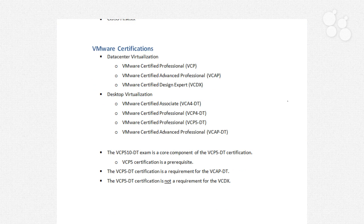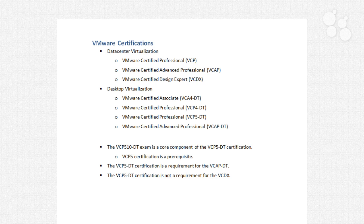We've got a couple of things to talk about first, and that's the certification process itself. This exam is part of the desktop virtualization half of VMware's certification roadmap. As you can see here, it is one in a series of soon-to-be four certifications associated with desktop technologies — the VMware Certified Associate, then the VMware Certified Professional for version 4 and version 5, and then eventually the VMware Certified Advanced Professional. This VCP 5.10-DT exam is a core component of the VCP 5.10-DT certification. You do have to have a VCP 5 certification before you can certify for VCP 5.10-DT, and the reason makes a lot of sense: in order to be successful with desktop virtualization, you have to know how vSphere works, and VCP 5 tests you on vSphere.